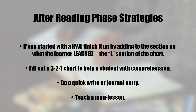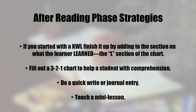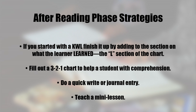If you started with a KWL chart, finish it up by adding to the section on what the learner learned — the L section of the chart. The tutor or learner can write down new information and together they can talk about it. Fill out a 3-2-1 chart and help the student with comprehension. Do a quick write or a journal entry. Writing is a great way to build comprehension and improve writing skills. Don't worry about grammar — just have the learner get his or her ideas on paper.